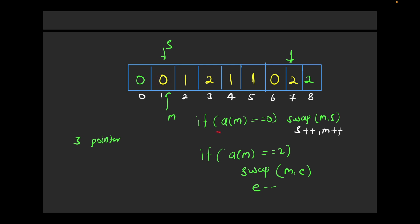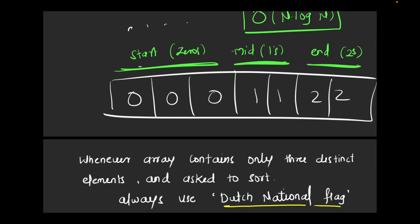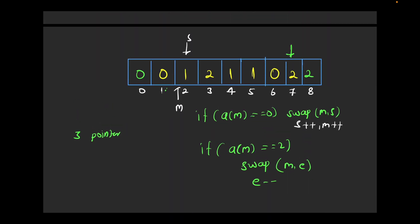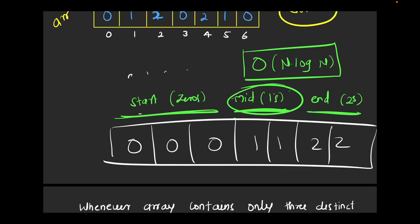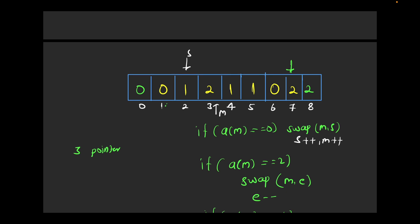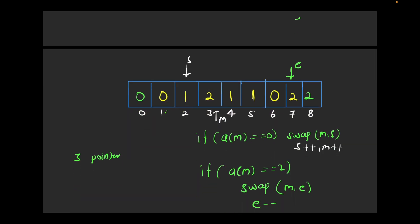Again mid contains zero, so swap with start — both at the same location, no real change — then start++ and mid++. Now mid contains one. Do we need to do anything? No, because the middle portion of the array should contain one and we already have one there. So if a[mid] == 1, simply do mid++. Move mid one position ahead.